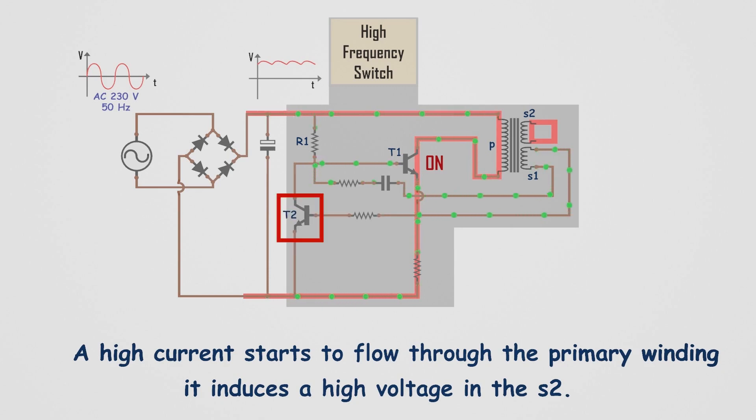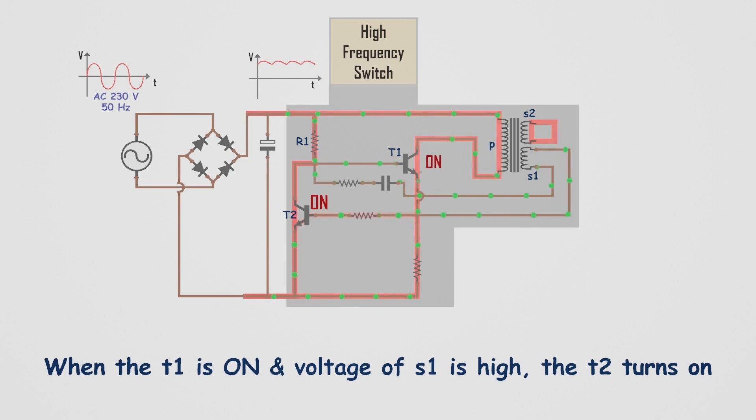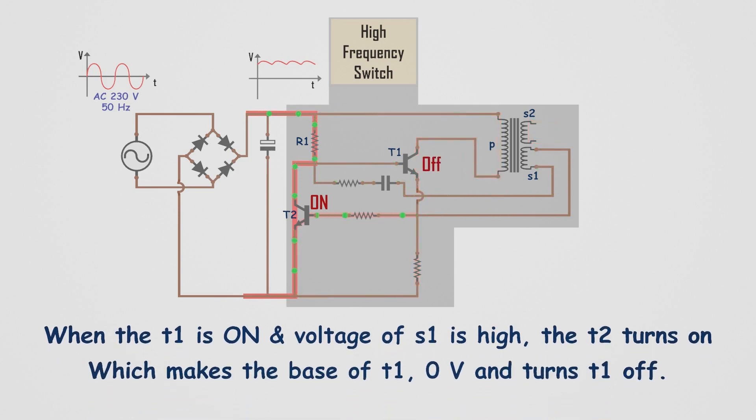Another transistor T2 is connected to the circuit. When the voltage at S1 is low, T2 remains in the off state. When the voltage at S1 becomes high, T2 turns on, which pulls the base of T1 to 0 volts and turns T1 off.